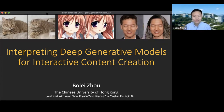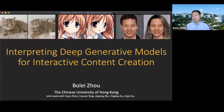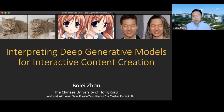Today my talk is on interpreting deep generative models for interactive content creation. I have done several works on interpreting deep neural networks, starting from my PhD thesis work where we interpret the neural network trained for scene classification. We visualize very interesting semantic concepts that emerge in the deep models with the supervision of scene classification. This work is more like an extension of that network interpretation to generative models — to see what concepts have emerged inside deep generative models.